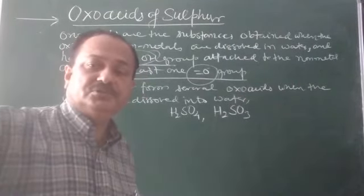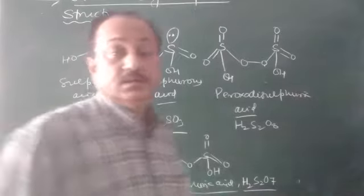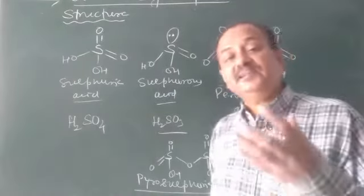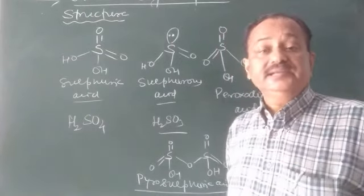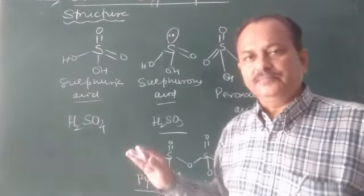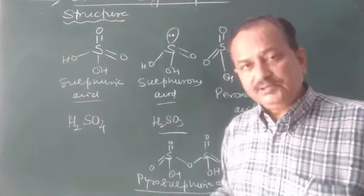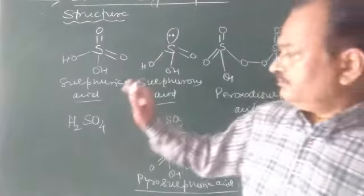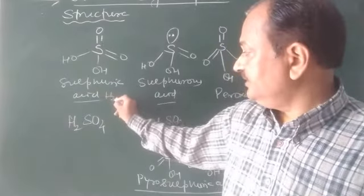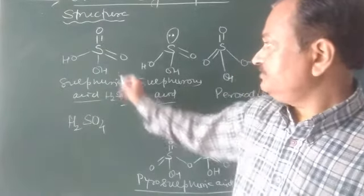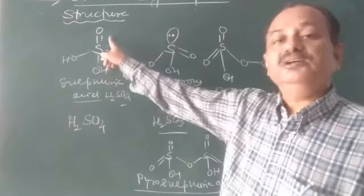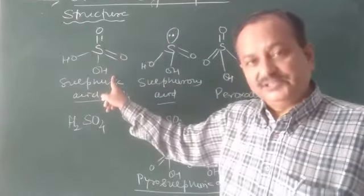Now we will see the structure of oxo acids. The structures are very significant — they explain the nature and character of the oxo acids, whether for phosphorus, sulfur, or nitrogen. Many exist, but here are some important ones. First is sulfuric acid, H₂SO₄. It has a tetrahedral shape, two double bond oxygen groups, and two OH groups.